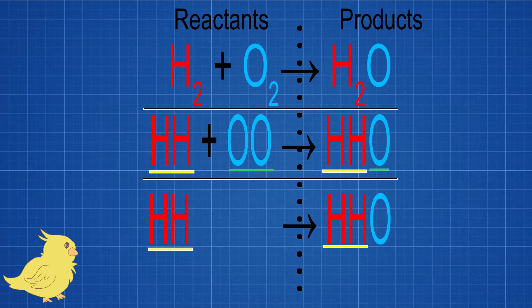Let's count up. Okay, so we've got four hydrogens on the left. We've got four hydrogens on the right. We've got two oxygens on the left and two oxygens on the right. Perfectly balanced.